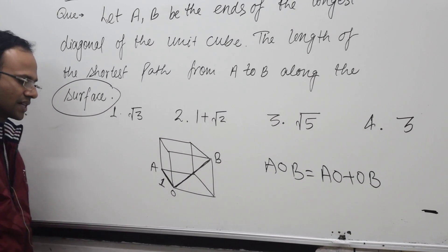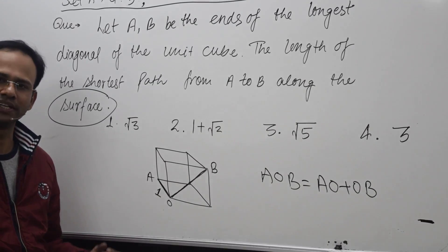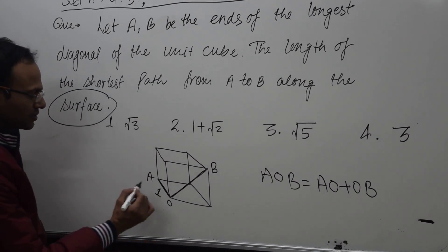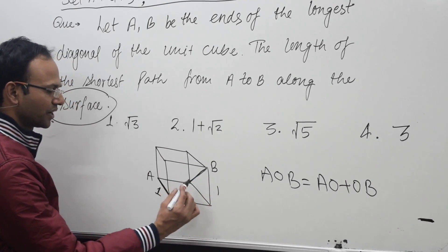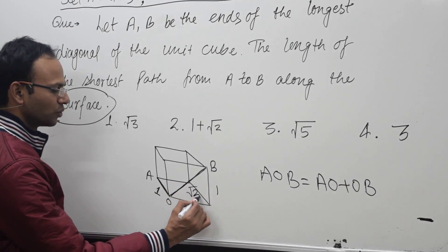OB will be √2. So AOB will be AO plus OB, that is 1 + √2.